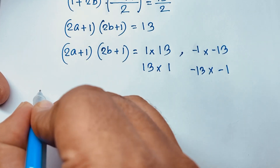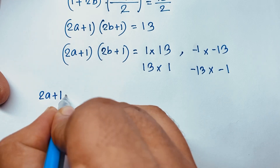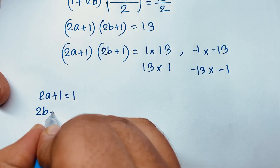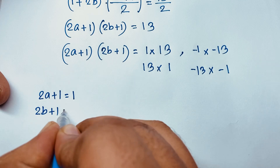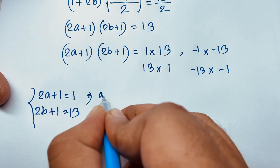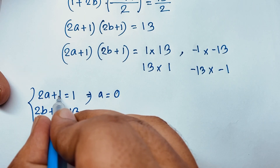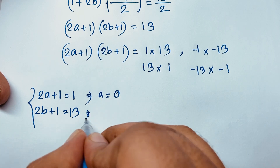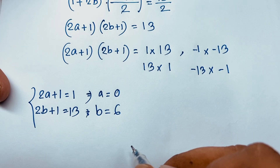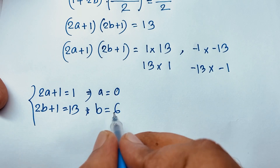Case 1: 2a + 1 = 1 and 2b + 1 = 13. So a = 0 (since 1 - 1 = 0, divided by 2 = 0) and b = 6 (since 13 - 1 = 12, divided by 2 = 6).